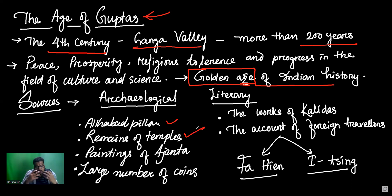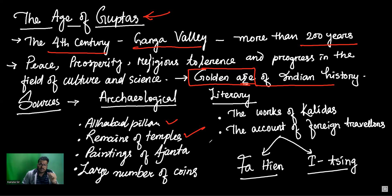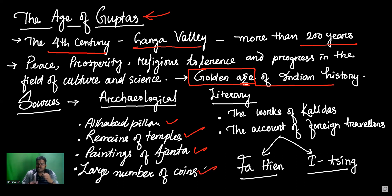There is a lot of information available from temples as well. Then the famous paintings of Ajanta — that is also from the Gupta period, and from there we also get some information. And besides that, excavations have yielded a lot of Gupta era coins, from which we also get quite good information. These were the four most important archaeological sources of the Gupta period.